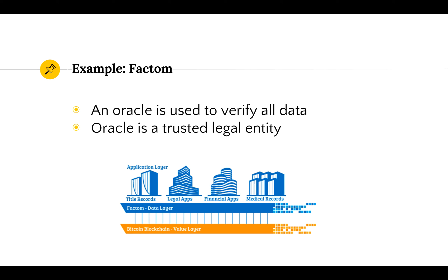Factom is a data layer on top of the Bitcoin blockchain. Factom verifies all of the data that's put onto their data layer by having a trusted legal entity in each jurisdiction that verifies all of the data is accurate to legal standards.